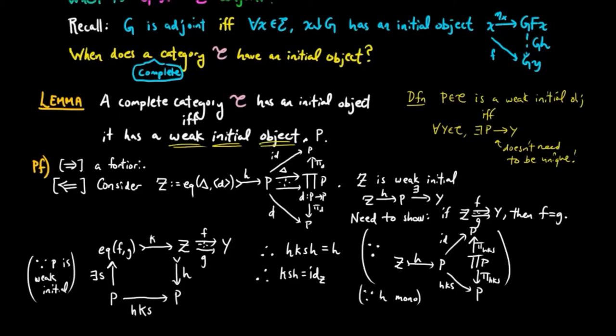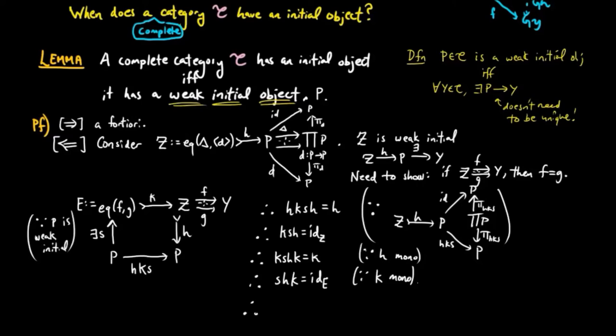We're halfway to showing K is an isomorphism. Next, we pre-compose by K on both sides of this equation, giving HKSHK equal to K. Again, since K was given by an equalizing diagram it is a monomorphism and thus left-cancellative. Therefore SHK equals the identity on the equalizer, which we may call E. So SH is in fact a left and right inverse to K, showing K is an isomorphism, and therefore F must equal G.